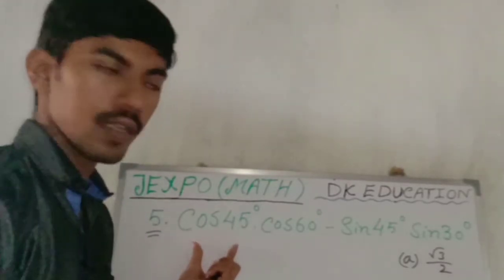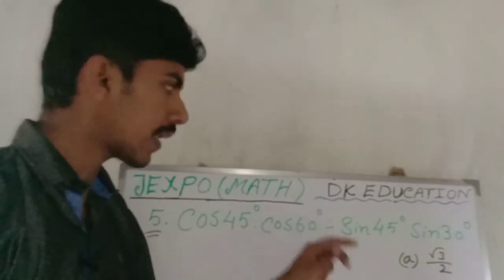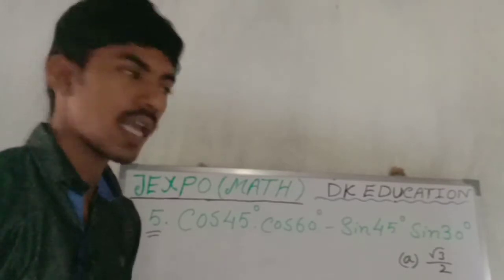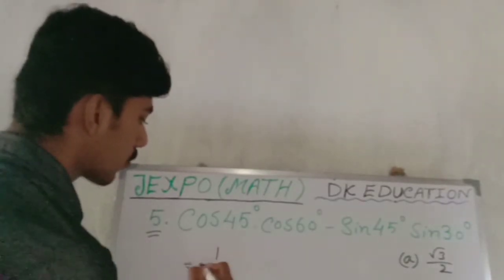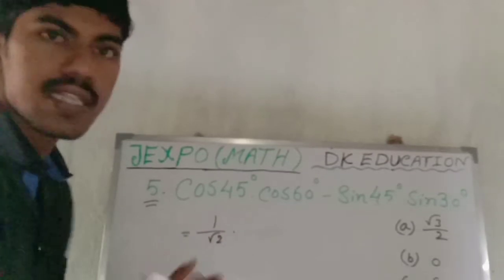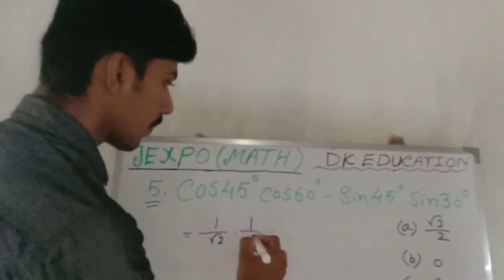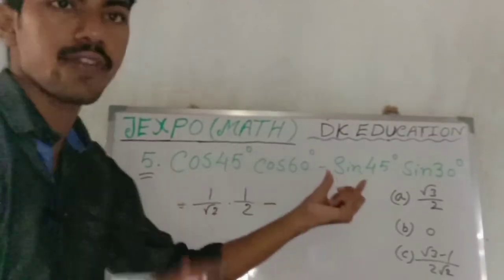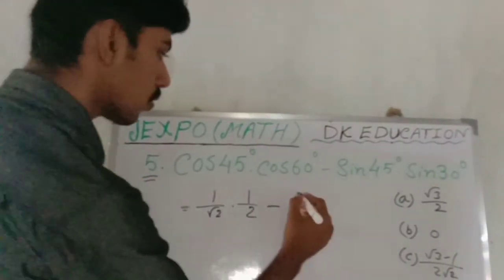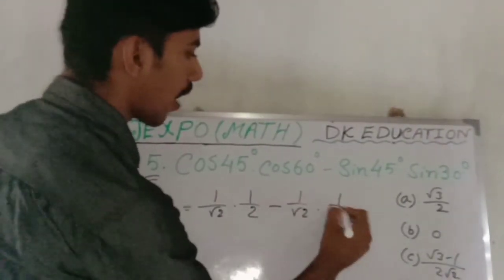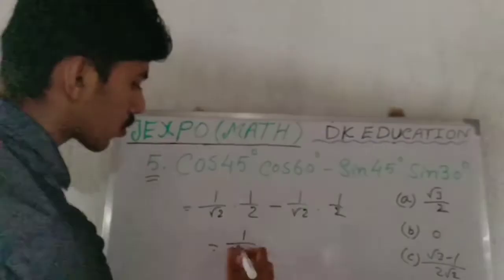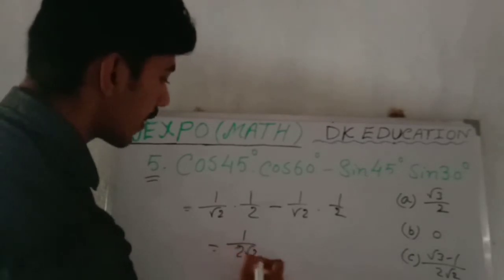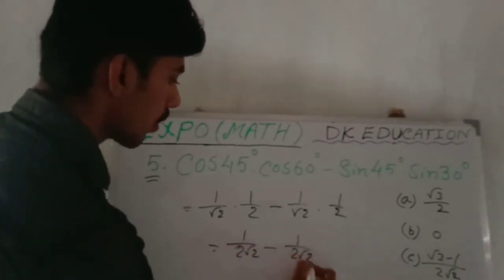What is this? Cos 45 into sin 60 minus sin 45 into sin 30. Cos 45 is 1 by root 2, into cos 60 which is 1 by 2. Minus sin 45 — cos 45 and sin 45 are the same, so 1 by root 2 into half. So 1 by 2 root 2 minus 1 by 2 root 2. So what is this?